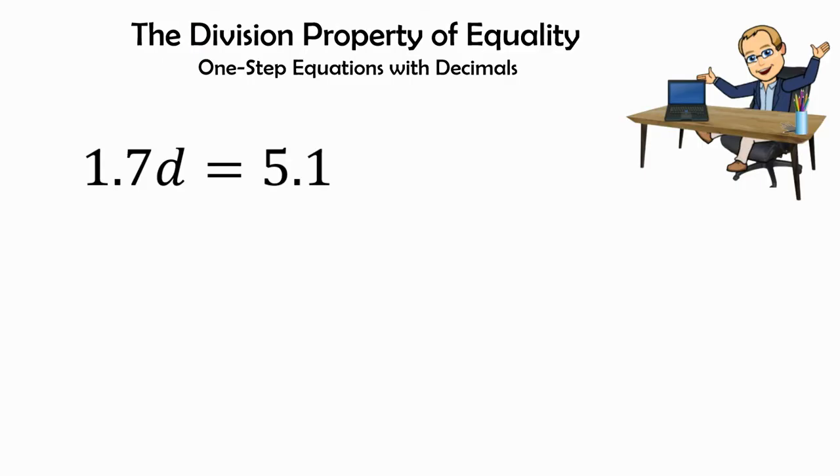What that means is, what am I going to divide on either side? I see that attached to my coefficient is a variable, and it's connected to each other by multiplication, and the inverse of multiplication is division. What I divide on one side of the equation, I'm going to divide by on the other side of the equation.